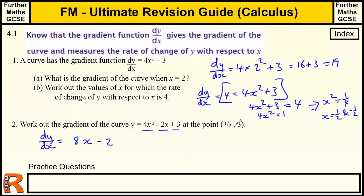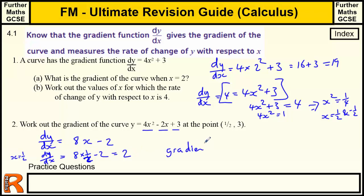At the point (½, 3), the y-coordinate isn't needed — we just want the gradient, so we evaluate the function when x is a half. dy by dx equals 8 times a half minus 2. 8 times a half is 4, take away 2 is 2. So the gradient equals 2 at the point (½, 3).